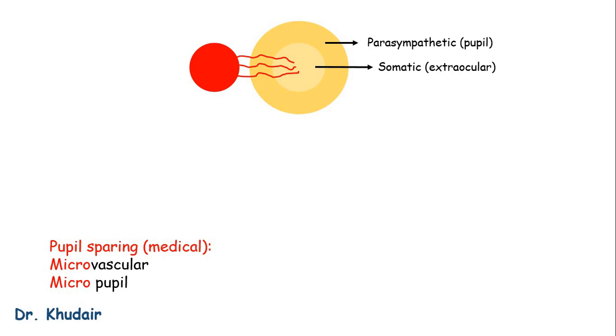And the most distal fibers, which are the somatic fibers, will be affected, whereas the parasympathetic fibers will be spared, so the pupil will be spared. So microvascular disease results in a micro pupil.